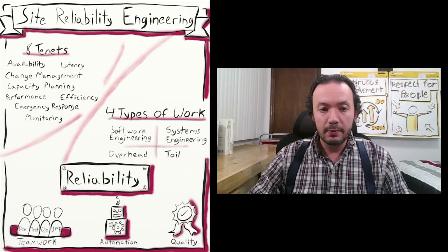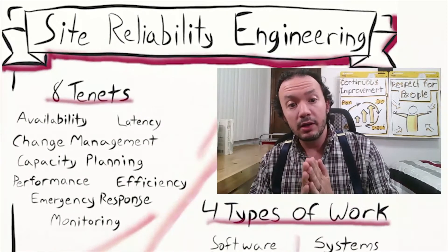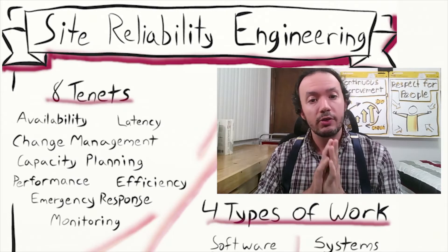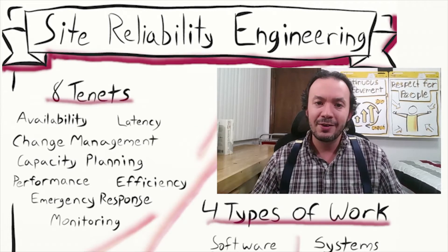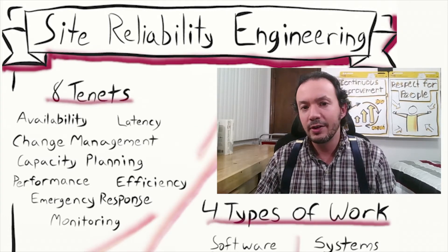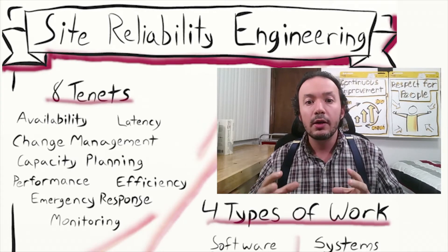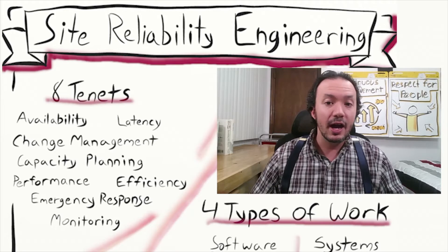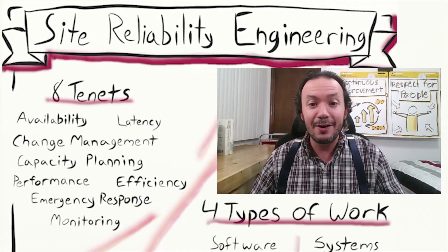We also have in SRE the concept of eight tenets. The first is availability. When we talk about availability, we have to ask: what is the right level of availability for our product or service? Frequently, what we find is 100% or five nines is really not necessary — it's expensive and takes a lot of extra work. Most of the time, people don't need something to be available all of the time. I have a hammer in my garage — if I'm not actually building something with it, I don't need it to be available 100% of the time.